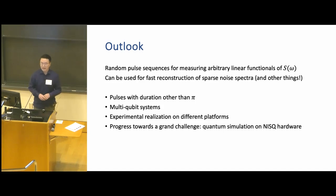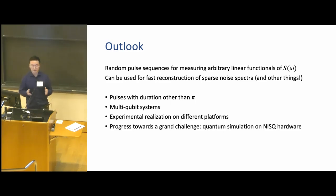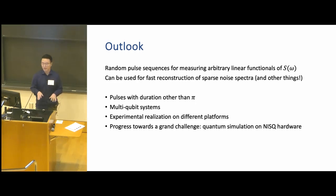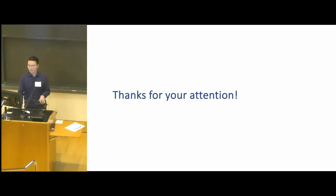In summary, we built a new toolbox called random pulse sequences that can measure arbitrary linear functionals of S(ω), enabling fast reconstruction of sparse noise spectra and other applications. Future research involves generalizing pulses to durations other than π, generalizing to multi-qubit systems, and seeking experimental realizations on different platforms — all contributing to the grand challenge of robust quantum simulations on current hardware.